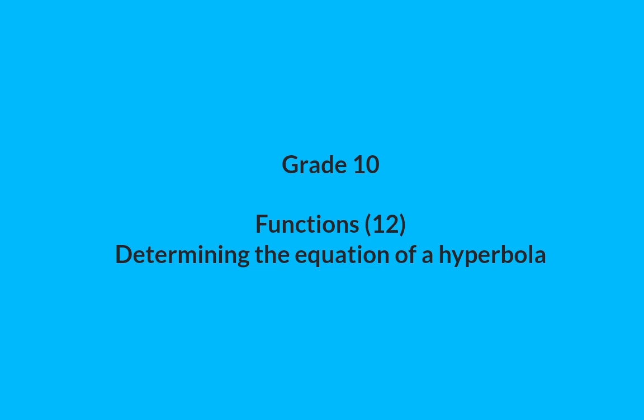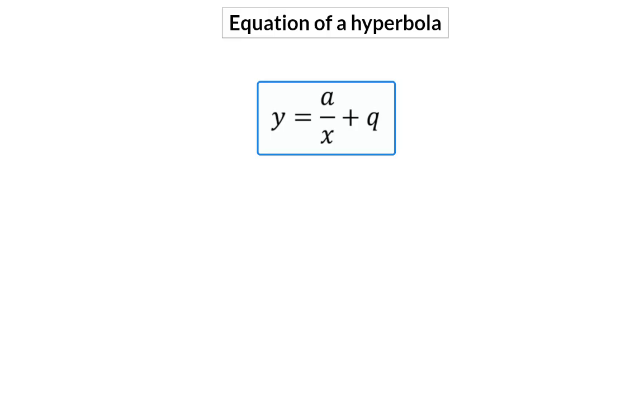In this video, we're going to have a look at how to determine the equation of a hyperbola. When determining the equation of a hyperbola, you need to get the constant value for A and Q. A indicates in which quadrants this hyperbola lies, and Q shows you the horizontal asymptote.